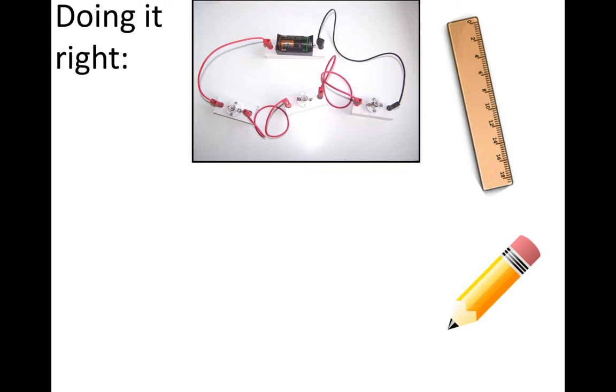This is how we do a circuit diagram right. We use a ruler and a pencil. We then use our circuit symbols. In this case, we have a cell attached to one bulb, second bulb, and a third bulb. It is then attached straight back to the cell.